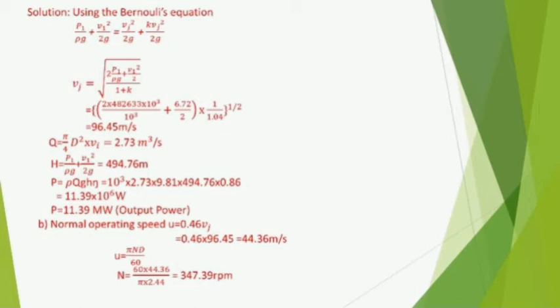For normal operating speed n: we know u/v2 = 0.46, where u is the speed of the wheel and v2 is jet velocity. Substituting, u = 44.36 m/s. Also, u = π n D / 60. Substituting, normal operating speed n = 60 × 44.36 / (π × 2.44) = 347.39 rpm.